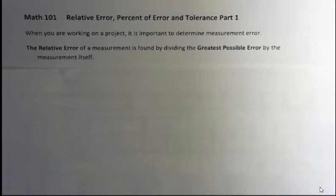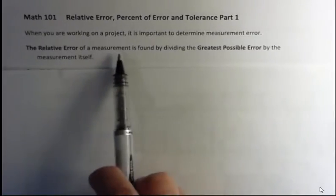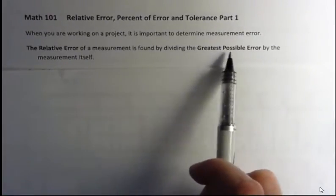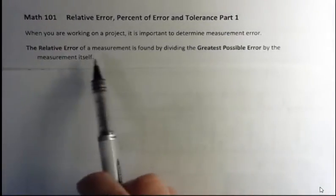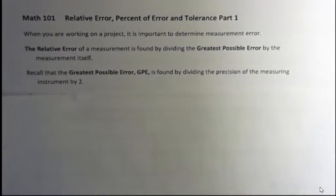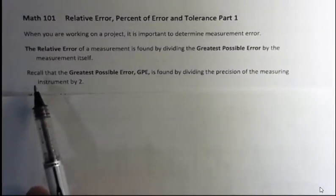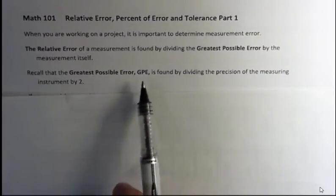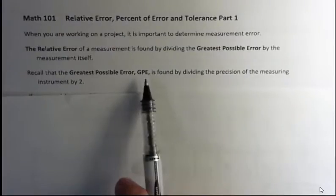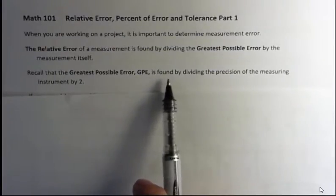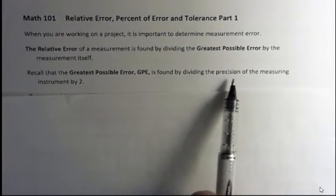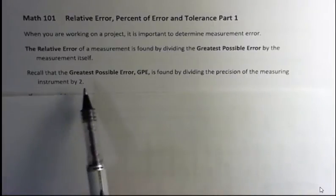When you're working on a project, it's important to determine measurement error. The relative error of a measurement is found by dividing the greatest possible error by the measurement itself. We've talked about greatest possible error already, but to refresh you, the greatest possible error, GPE, is found by dividing the precision of the measuring instrument by two.